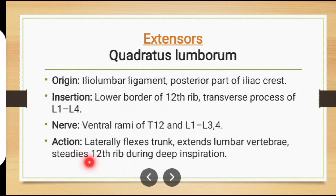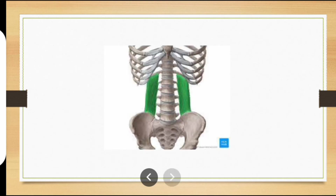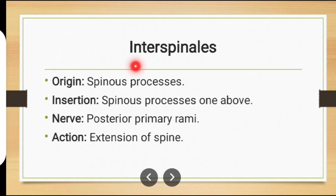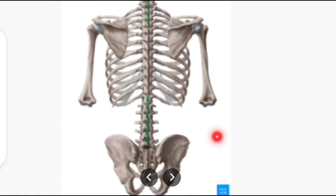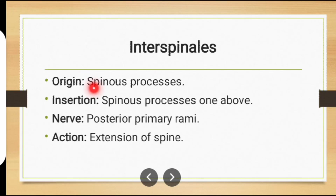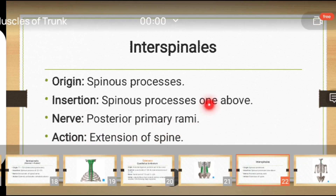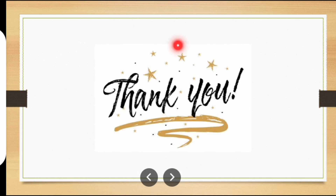The next muscle is interspinalis muscle. The muscle in green is interspinalis muscle. Origin: spinous process. Insertion: spinous process one above. Nerve supply: posterior primary rami. Action: extension of spine. Thanks for watching this video. Please like, subscribe, and share my channel for more useful videos.